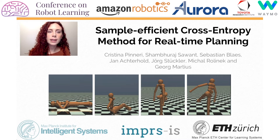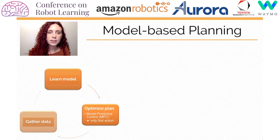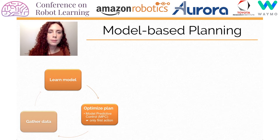Let's start by looking at the anatomy of a model-based planning problem. The agent learns a model of the world from interactions with the environment and then uses this internal model to plan optimally in order to solve the specific task. The most popular algorithms make use of model predictive control, where the full plan is computed but only the first action gets executed.